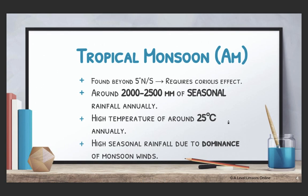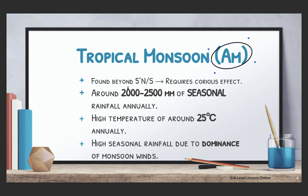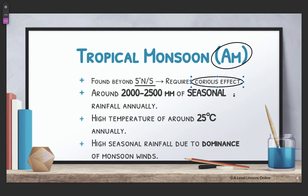Next, the tropical monsoon climate, otherwise known as the AM climate, is found beyond 5 degrees north and south. Because it features seasonal rainfall, you actually require the Coriolis effect to determine which places face this seasonal rainfall. There is around 2,000 to 2,500 mm of seasonal rainfall — note the keyword 'seasonal.' Unlike the AF rainforest climate which has uniform annual rainfall, the tropical monsoon has certain months of extremely high rainfall and other months of extremely low rainfall.